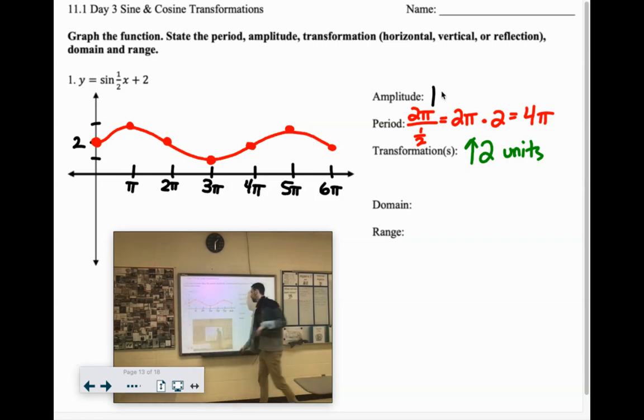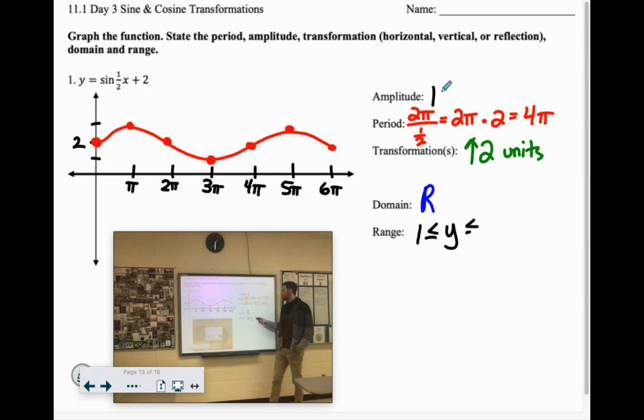And let's handle our domain and range. Now domain, our x values could be anything, so that is all real numbers for domain. And then the range is the y values, so the lowest y value we hit was one, the highest value we hit was three. So we're going to say one is less than or equal to y, which is less than or equal to three.